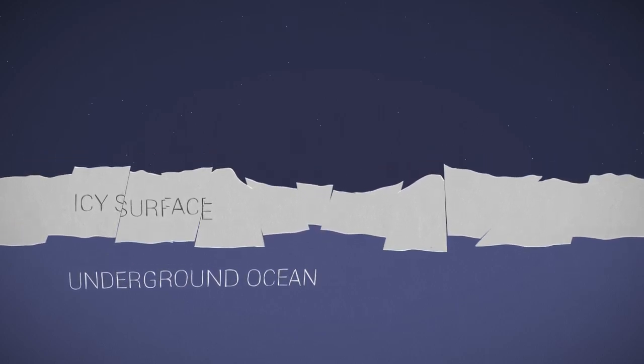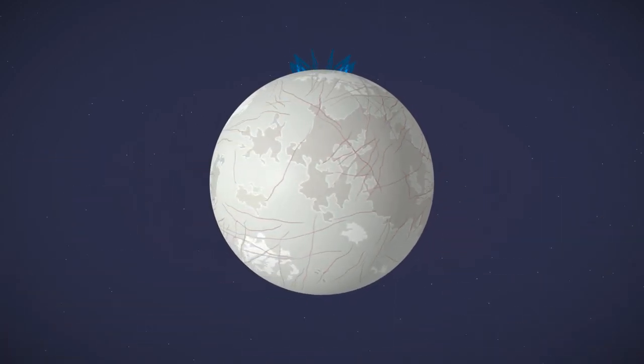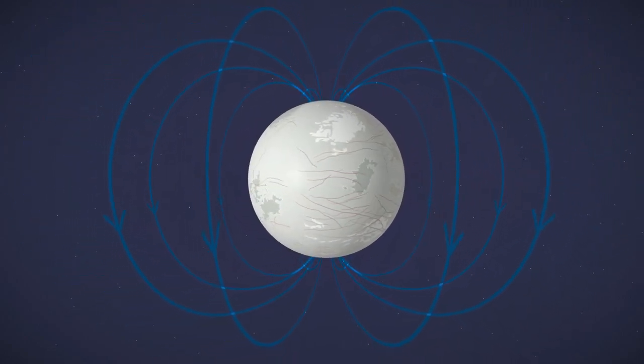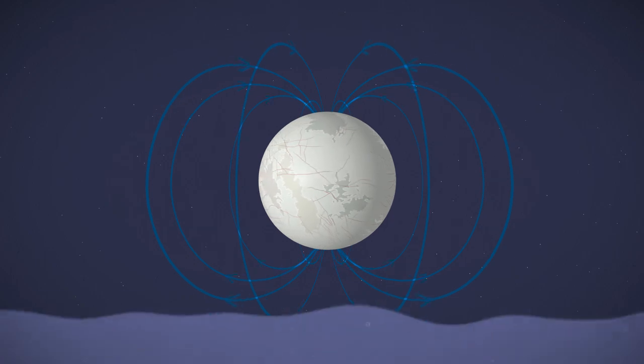And the final most compelling clue? Europa's changing magnetic field. What's under the surface conducting that much electricity? A hidden saltwater ocean would explain it.